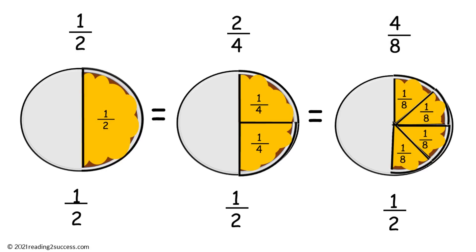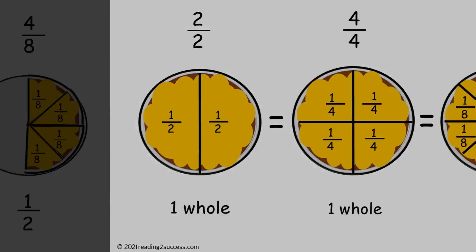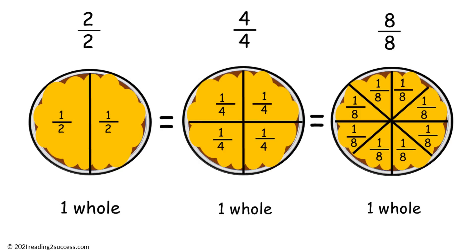One half of a pizza equals two fourths of a pizza equals four eighths of a pizza. And two halves equals four fourths equals eight eighths — they are all one whole.